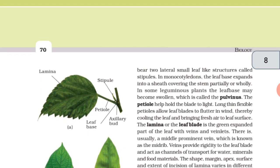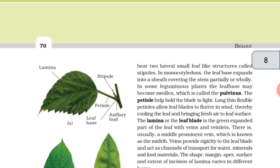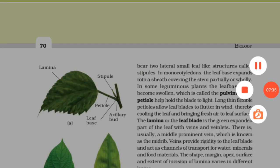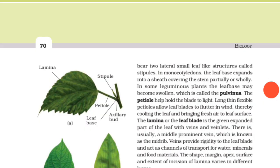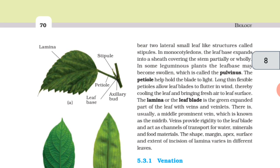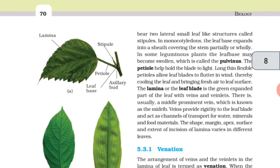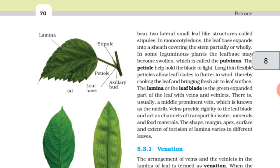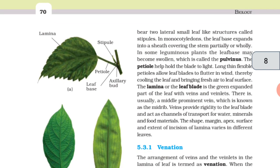The lamina or the leaf blade is the green expanded part of the leaf with veins and veinlets. There is usually a middle prominent vein, which is known as the midrib. Veins provide rigidity to the leaf blade and act as channels of transport for water, minerals, and food materials. The shape, margin, apex, surface, and extent of incision of lamina varies in different leaves.